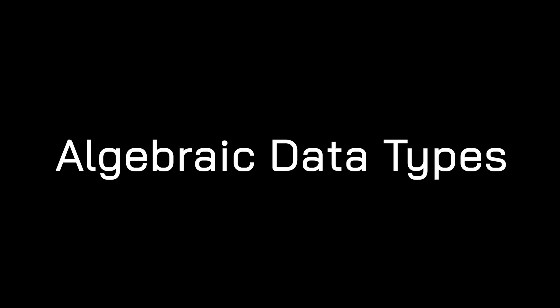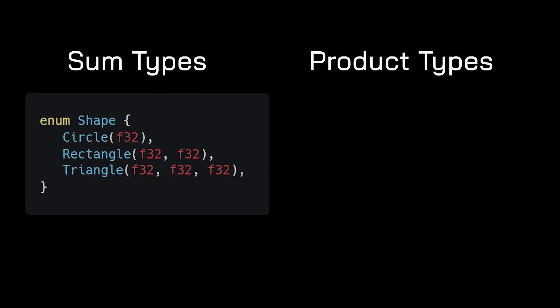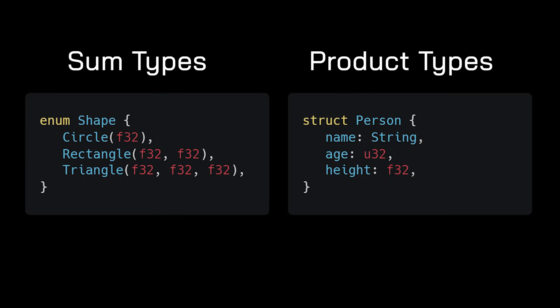Next, let's talk about features Rust took from functional languages like Haskell. The first is algebraic data types, or ADTs. ADTs allow us to create composite types using sum types and product types. Sum types, also known as variant types, let us define a type that could be one of several variants — for example, a shape that could be a circle, rectangle, or triangle. Product types are similar to structures in C and let us bundle multiple types together, for example a person type composed of a string, an unsigned 32-bit integer, and a floating point number.